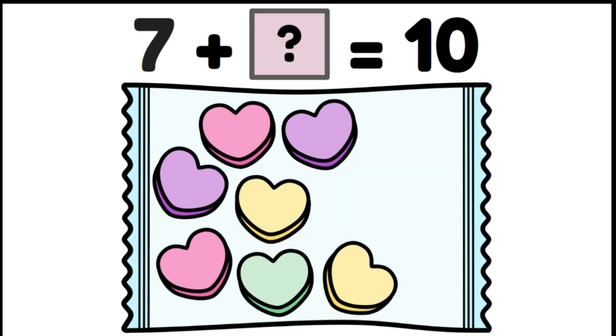Who is 7's partner? That's right. 7 and 3 are friends of 10. So 7 plus 3 is 10.